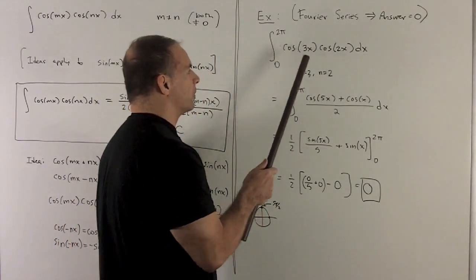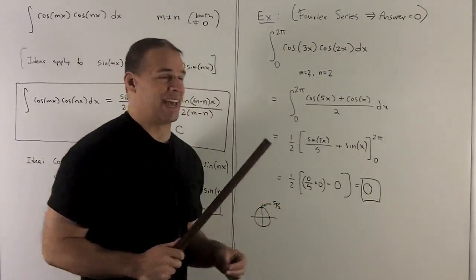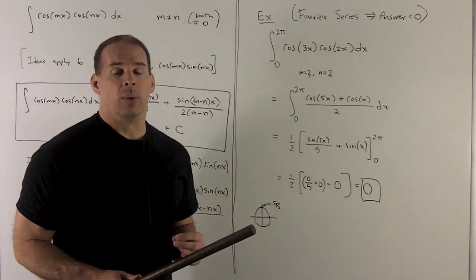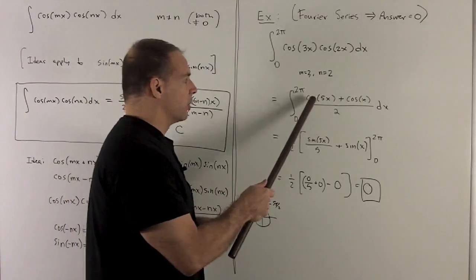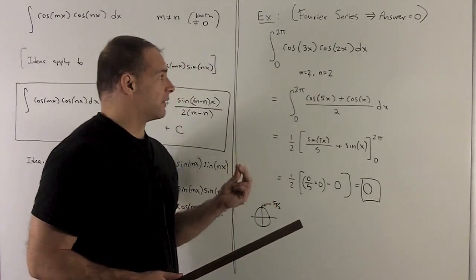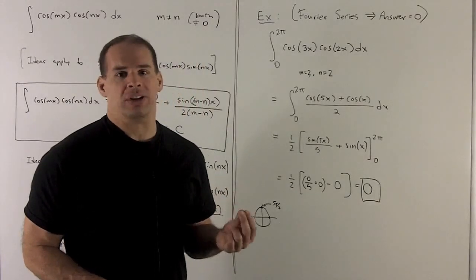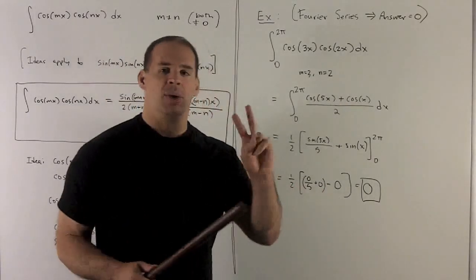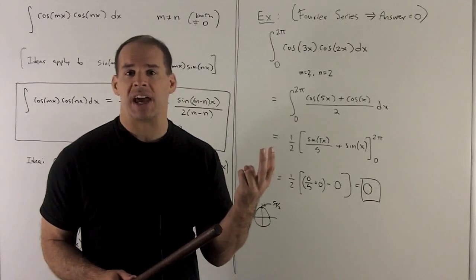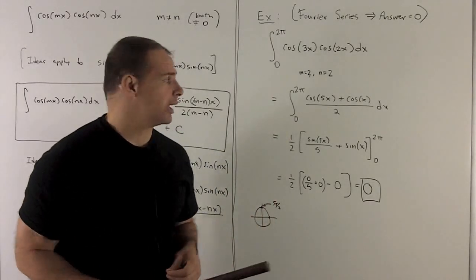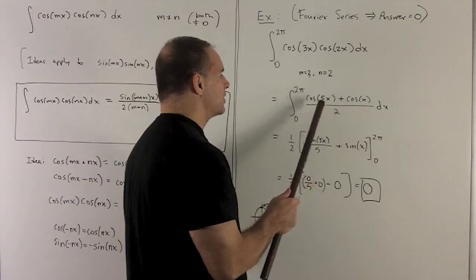So I'm going to do cosine 3x, cosine 2x dx. m is 3, n is 2 here. So what are we going to do? We're going to take the sum, so it's going to give me a cosine 5x. Then I'm going to take the difference. That's going to give me a cosine x. Note, it won't matter what order you do the difference in, because this is cosine. If I do it in the wrong order, it just throws a minus sign in. Because cosine is even, it doesn't make a difference. It goes away.